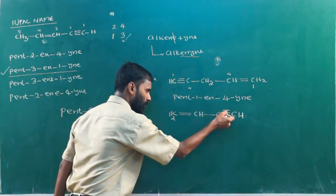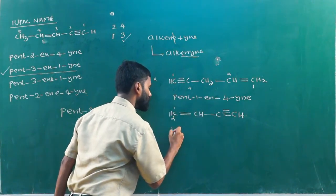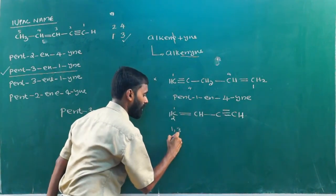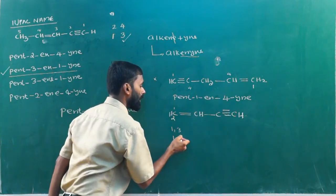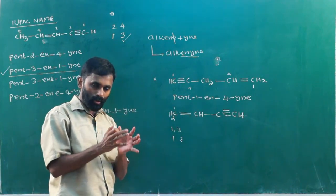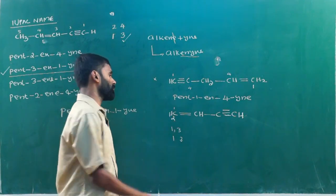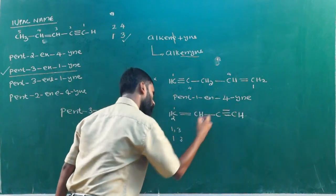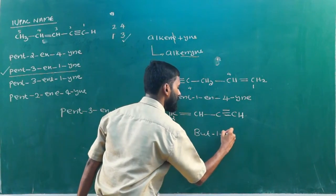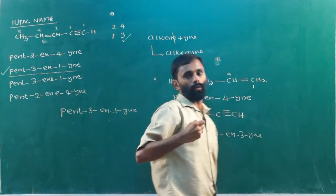Double bond and triple bond. This is the number: one, then two, three — one, three combination. Triple bond at one, two, three. Again, double bond at three. Left leg number, right leg number — the combination is the same. When the combination is the same, double bond preference applies. Total number of carbons: one, two, three, four — but. Bute — double bond: bute-1-en. Triple bond: bute-1-en-3-yne. So the IUPAC name is but-1-en-3-yne.